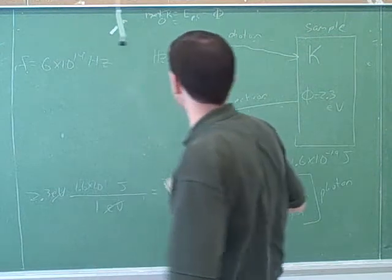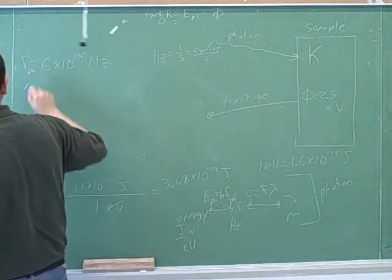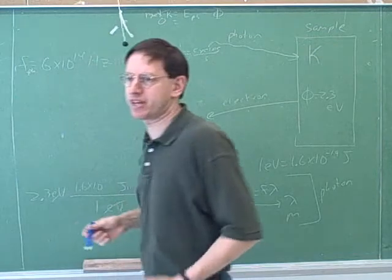So let's say that we're sticking with the potassium, but now we're going to use a photon that has a frequency of 6 times 10 to the 14th.